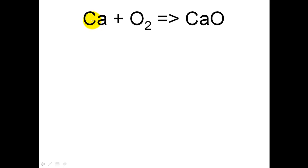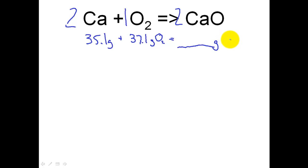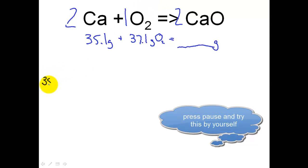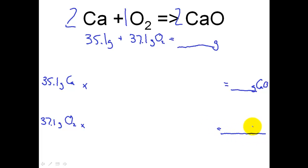In our very last example for the day, we've got calcium reacting with oxygen to produce calcium oxide. Let's balance this — it ends up being a 2-1-2 affair. Let's say I begin with 35.1 grams of calcium and I'm reacting with 37.1 grams of O₂. The question is: how many grams of calcium oxide will I make, and what are my limiting and excess reactants? The reaction is balanced, so we can begin. I have two givens — 35.1 grams of calcium and 37.1 grams of oxygen — and I want to find out how much CaO I will make.